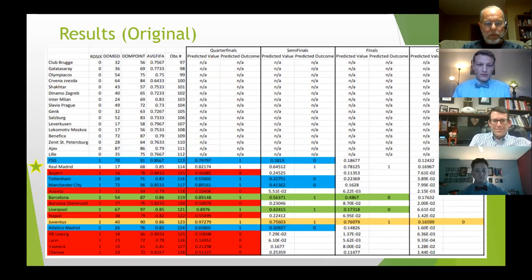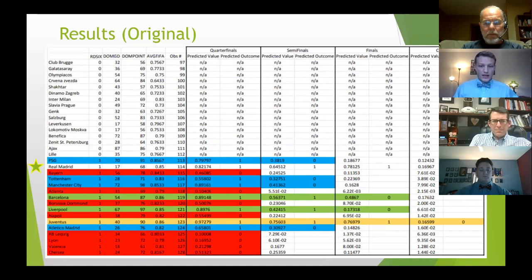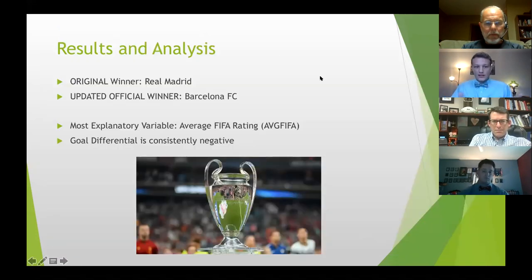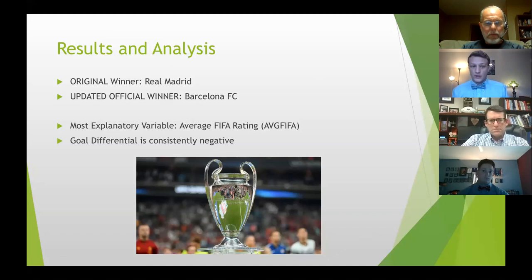My first model predicted Real Madrid as the winner. The predicted winner changed in the revised model because the updated version included round of 16 first-leg results, whereas the original did not. With that additional data, the second model predicted Barcelona more efficiently. My most explanatory variable throughout was average FIFA rating.